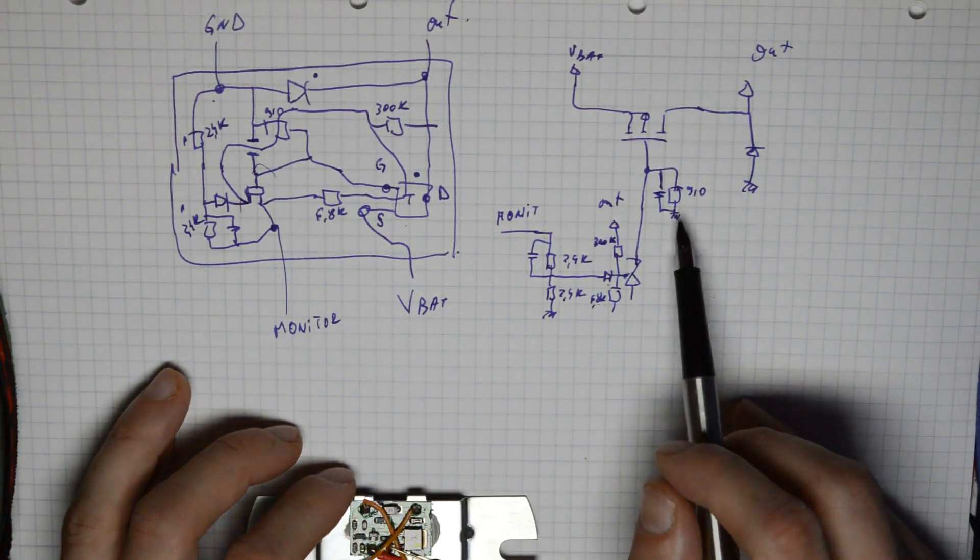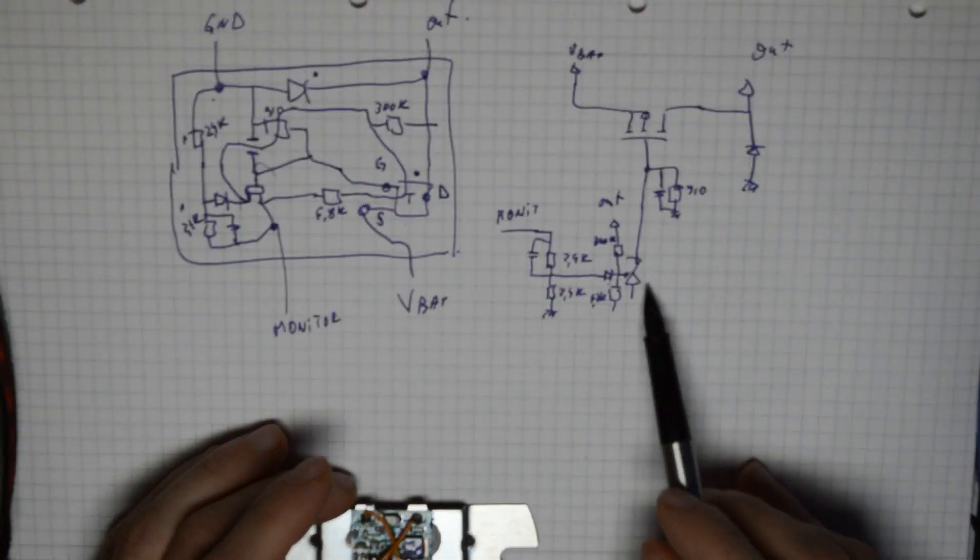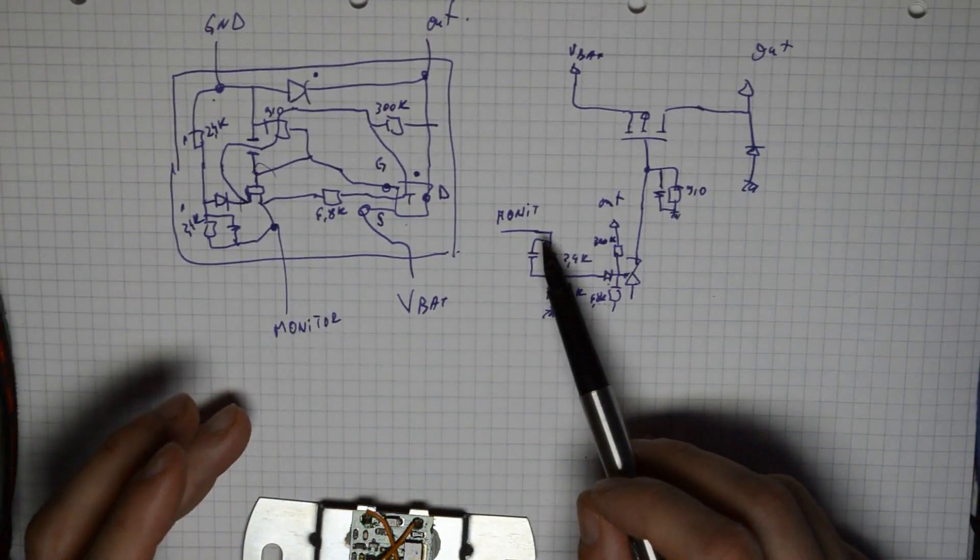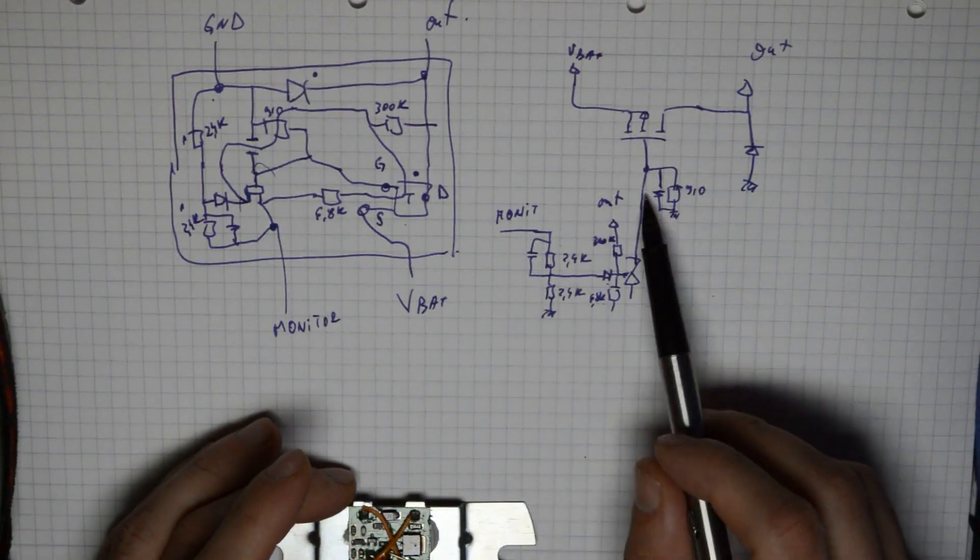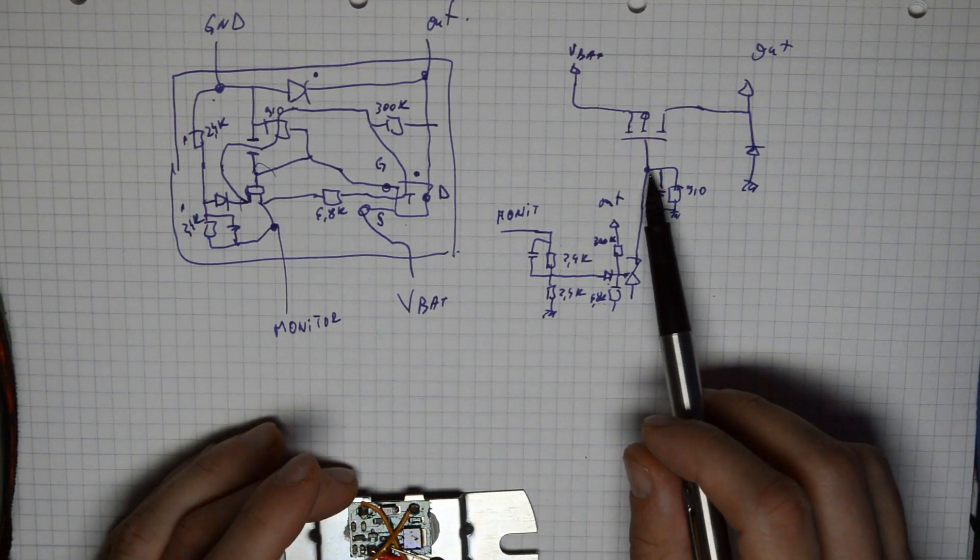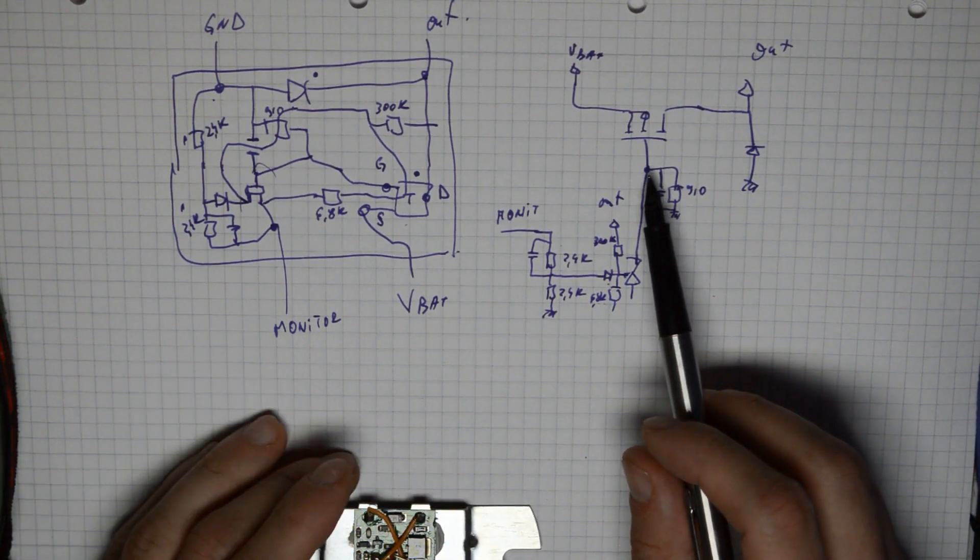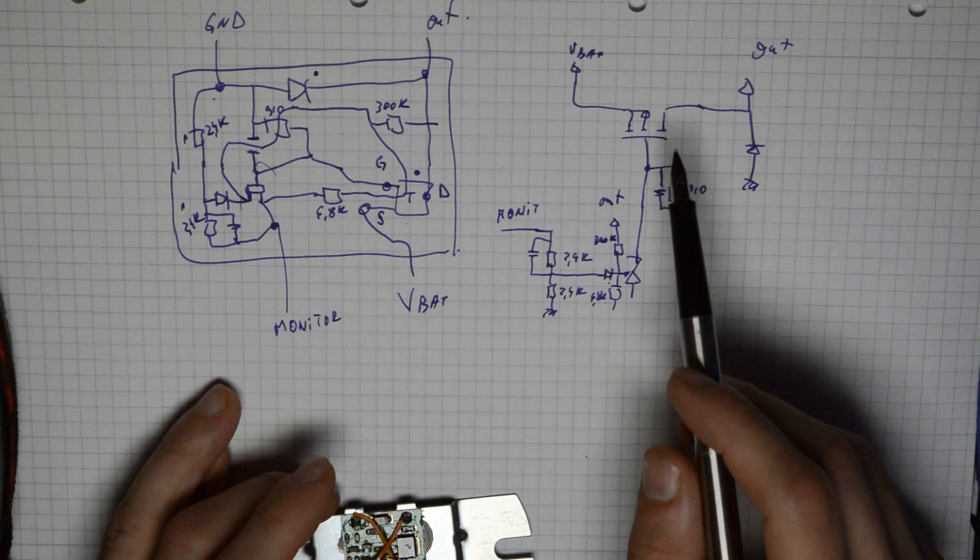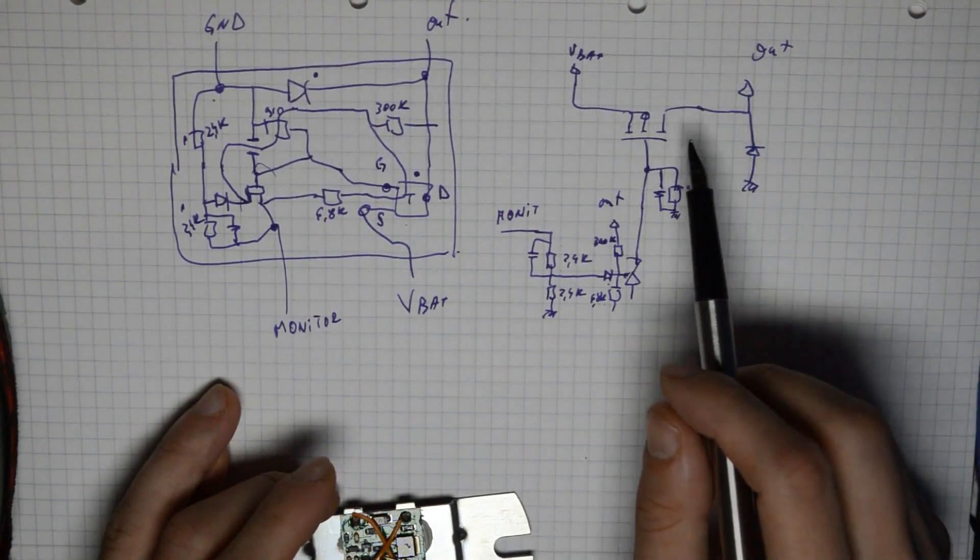So basically what this circuit will do is when you have more than 13.5 volts, it will drive the gate of the P-channel MOSFET high and the circuit will turn off, preventing voltage going to the output.